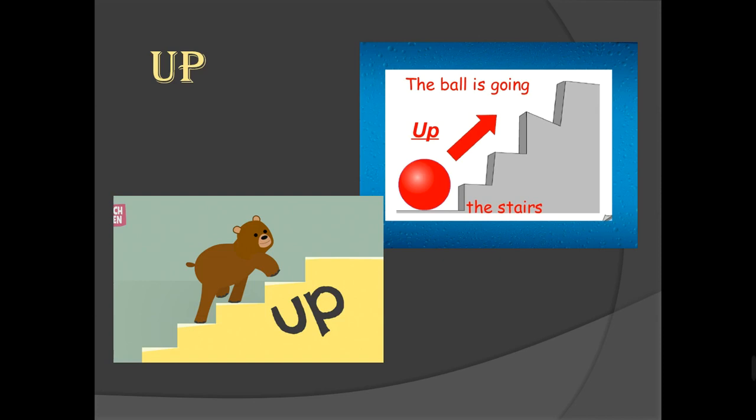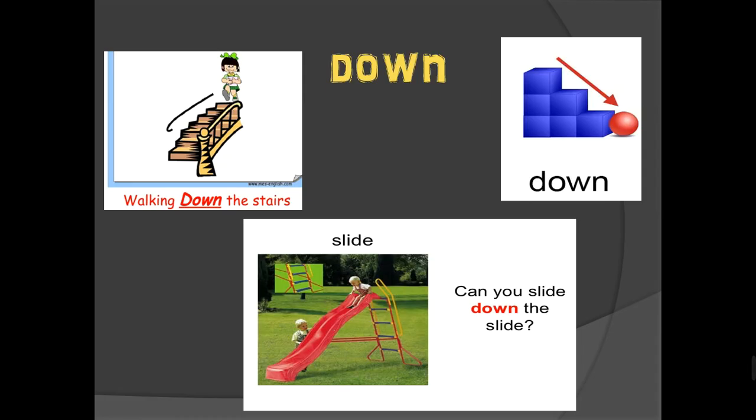Next, the opposite of up is down. I think most of you use these words. We go down the stairs like this girl. The ball is going down. And we can use it also when we're having fun in the garden sliding. Can you see? Can you slide down the slide? So the girl here or the kids are sliding and going down.